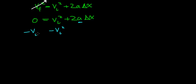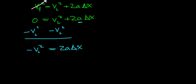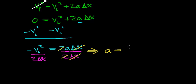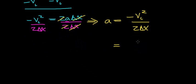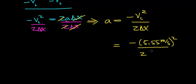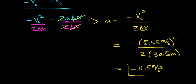We can rearrange this equation to solve for acceleration. First, subtract the initial velocity squared from both sides, giving: negative v_initial squared equals 2 times the acceleration times the change in distance. Then divide both sides by 2 times the change in distance. The 2 and delta-x cancel, yielding: acceleration equals negative v_initial squared divided by 2 times the change in distance. Plugging in negative 5.55 meters per second squared divided by 2 times 30.5 meters gives an acceleration of negative 0.5 meters per second squared.